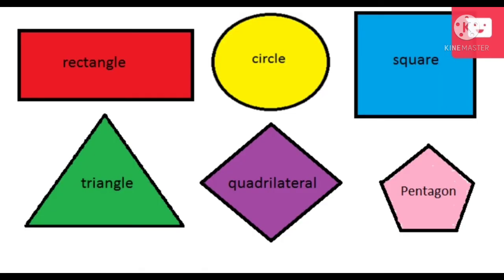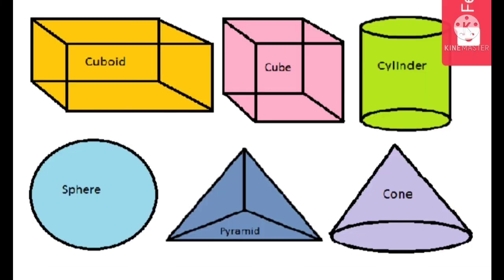Take page number 46, part A. A ball is a solid shape used in various games. Look at the pictures of the balls used in various games. Choose the correct names from the box and write them below. The answers are: first — baseball; second — bowling; third — billiards; fourth — golf ball; fifth — volleyball; sixth — football; seventh — rugby.